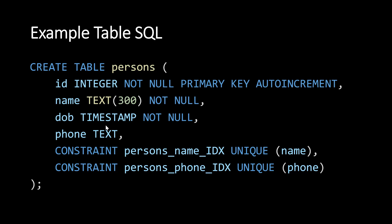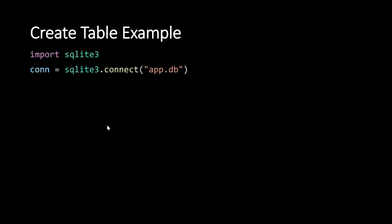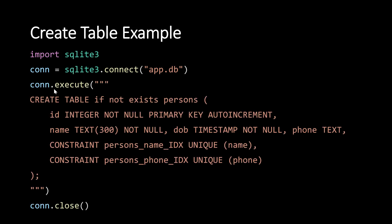So how do we execute this SQL from our Python script? First you import the sqlite3 module and connect to the database. Then you run connection.execute() with the SQL to create the table — that's all, and the table should be created. I'm writing IF NOT EXISTS so that if the table is already present, no new table will be created. Without IF NOT EXISTS, you'd get an error when running the script a second time.